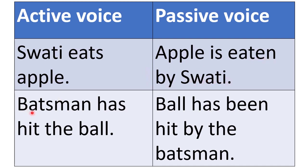Another example: 'Batsman has hit the ball.' Batsman is the subject — in passive voice, Batsman becomes the object. Ball (the object) becomes the subject. 'Has hit' is present perfect tense, so in passive voice the rule is has/have + been. Ball is singular, so we use 'has.' Third form of 'hit' is 'hit.' Result: 'The ball has been hit by the Batsman.'